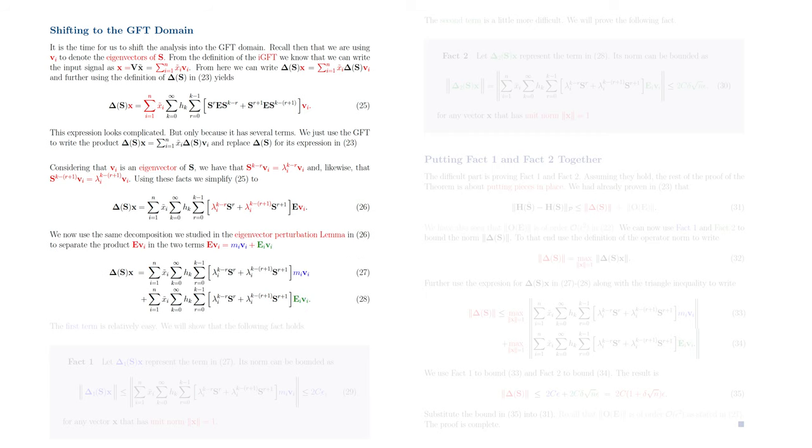We are now going to use the decomposition we stated in the eigenvector perturbation lemma. We are going to do that because in equation 26 a term of the form E times Vi has appeared.